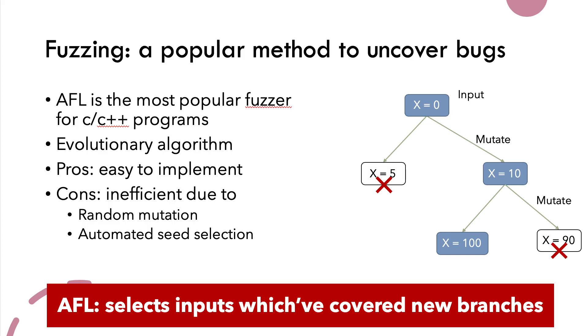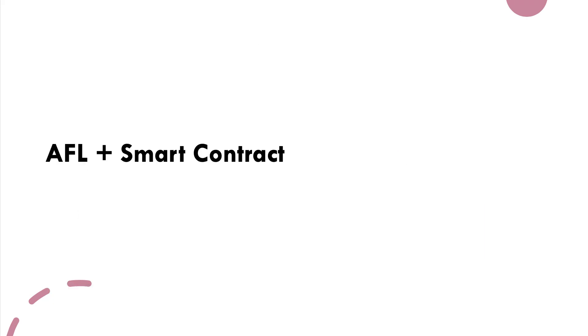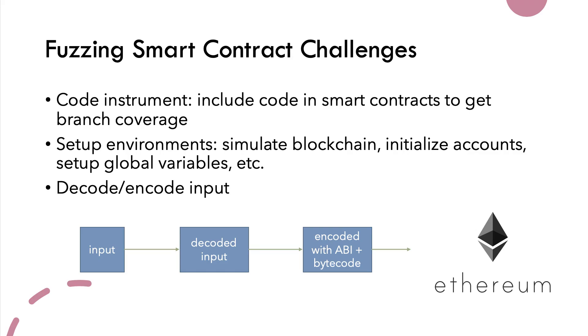AFL selects inputs which cover new branches. We have AFL for C++ programs — why don't we have a variation for smart contracts? Because smart contracts are different from C and C++ programs, we have to deal with some challenges. For example, code instrumentation: we have to include code in the smart contract to get branch coverage.